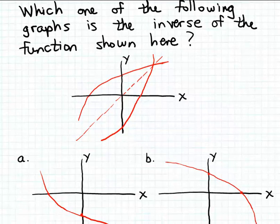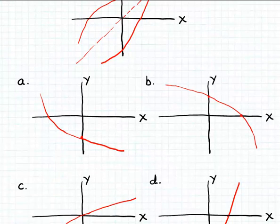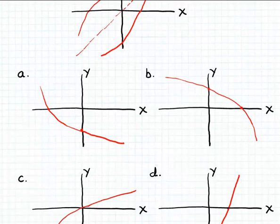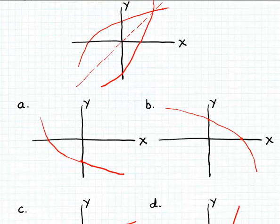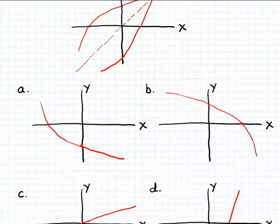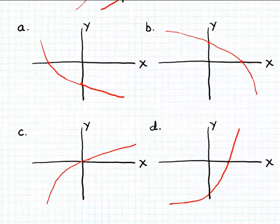So let's see which of the pictures here, A, B, C, or D, which of the graphs match the graph that I've drawn. Well, it's clearly not A, not B, not C, but I think D is the closest match here. So the answer here is D.